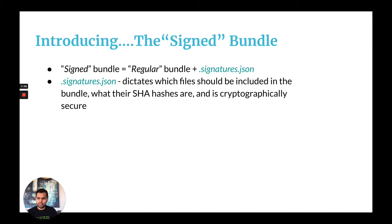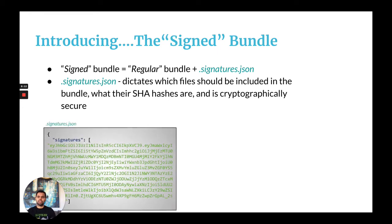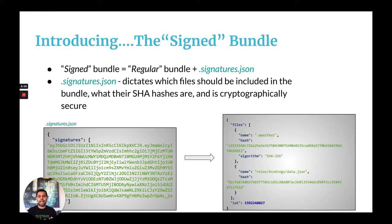Introducing the signed bundle. The signed bundle looks and feels exactly like a regular bundle, but it has an extra signatures.json file. The signatures file dictates what files should be included in the bundle, what the SHA hashes are for those files, and is cryptographically secure. It's essentially an array of JSON web tokens which encapsulate the signature of a bundle. If you were to decode a JWT, you would see the bundle includes files like the manifest file and a data.json file, along with the hash of the content of each file.